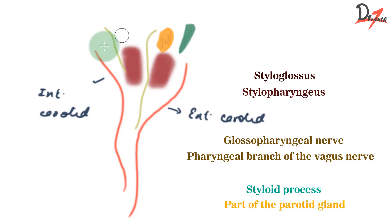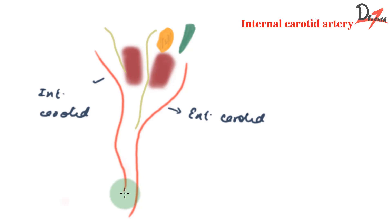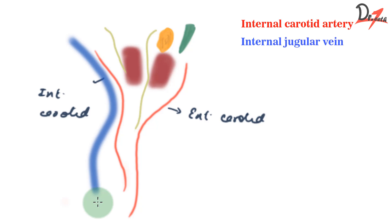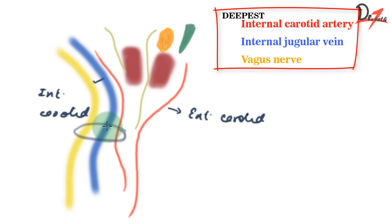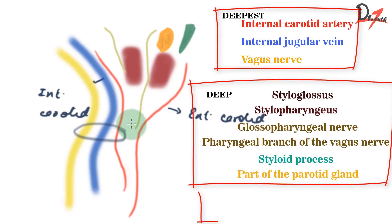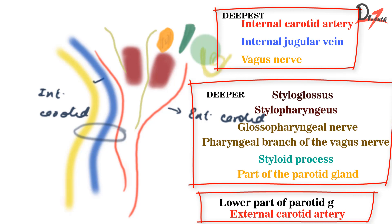These were the structures deep in the posterior part of the digastric triangle. But still deeper, we have three main structures: the internal carotid artery, the internal jugular vein, and the vagus nerve. These three are the deepest structures. Superficially in the posterior part we had the external carotid artery before it enters the parotid gland, and the lower part of the parotid gland.